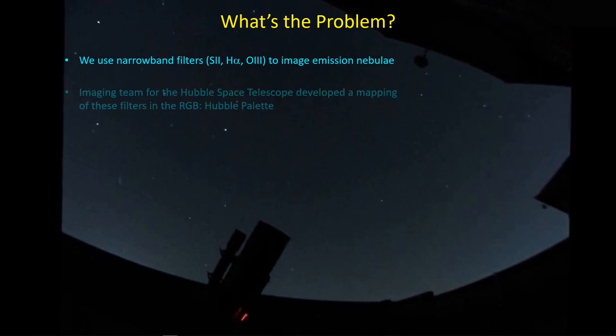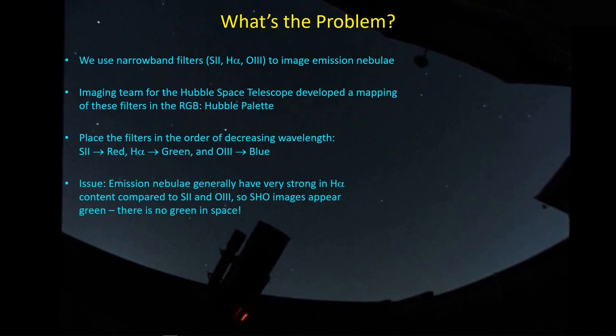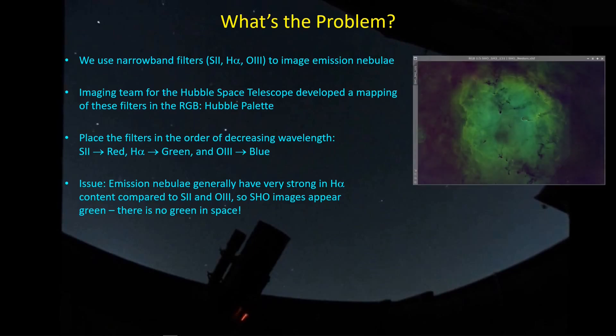As a result, the imaging team at the Hubble Space Telescope developed a mapping called the Hubble palette. They take the S2, the longest wavelength color, and map that to red, which is the longest wavelength of red, green, and blue. Then the hydrogen alpha, which is the next longest wavelength, maps to the green color. And then the oxygen 3, which is the smallest wavelength, maps to blue.